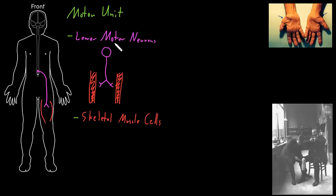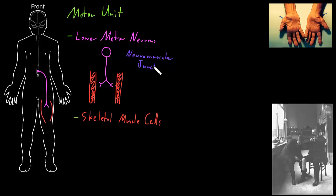This synapse between a lower motor neuron and a skeletal muscle cell has a special name, and that special name is the neuromuscular junction — 'neuro' for the neuron and 'muscular' for the muscle cell. Lower motor neurons will usually synapse with multiple skeletal muscle cells, so they'll have multiple neuromuscular junctions. And all of this is the motor unit.